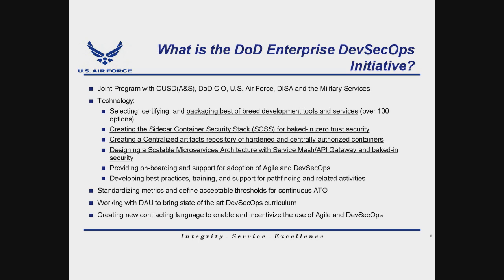We bring SCSS turnkey on the repo so people can use it to get baked-in security in their software factory. On top of that, we push a microservice architecture with a service mesh. The service mesh handles east-west traffic between your containers and microservices. We picked Istio, which is open source, to do east-west traffic, load balancing, and zero trust. That's baked in, helping teams move from a monolithic application to microservices.